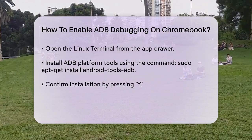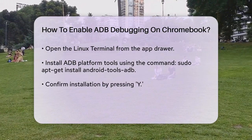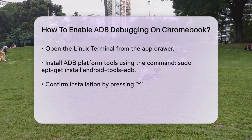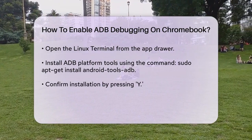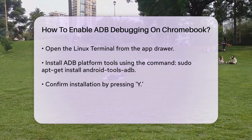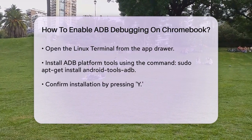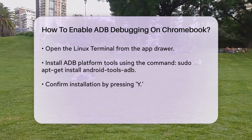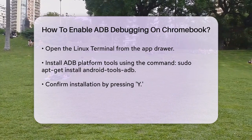After the restart, open the Linux terminal from your app drawer. You'll need to install the ADB platform tools using the command: sudo apt-get install android-tools-adb. Just press Y to allow the installation.